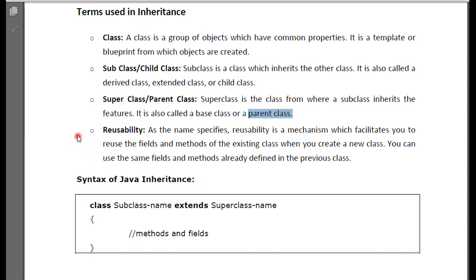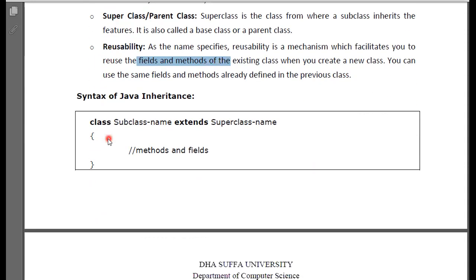Reusability functionality — your parent class, whose child class is inherited, can access the fields and methods. For the syntax of inheritance, you use the class keyword, then the subclass name, then the extends keyword, followed by the superclass name.